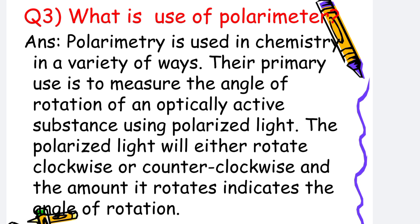What is the use of a polarimeter? Polarimetry is used in chemistry in a variety of ways. Its primary use is to measure the angle of rotation of an optically active substance using polarized light. The polarized light will either rotate clockwise or counterclockwise, and the amount it rotates indicates the angle of rotation.